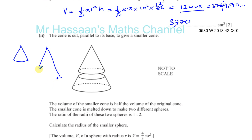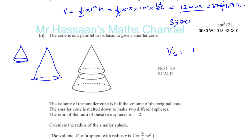The volume of the smaller cone is half the volume of the original cone. The original cone had volume 1200π, so the volume of the smaller cone is 1200π ÷ 2 = 600π cm³.